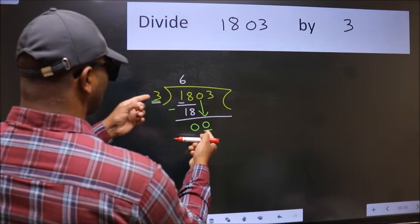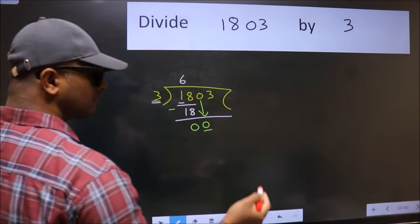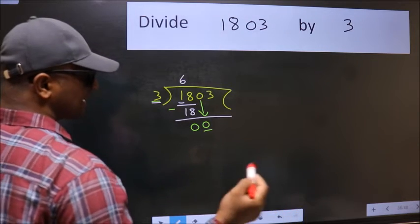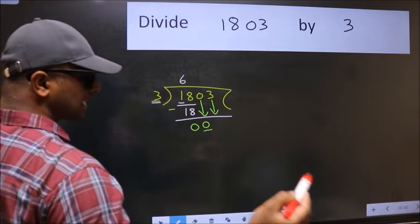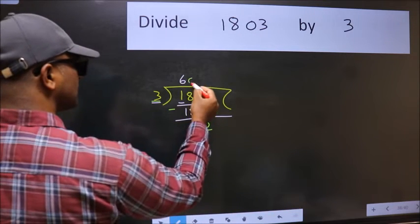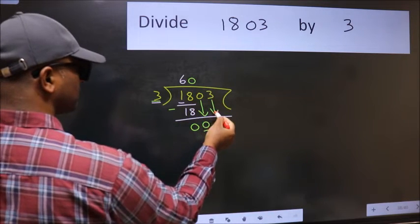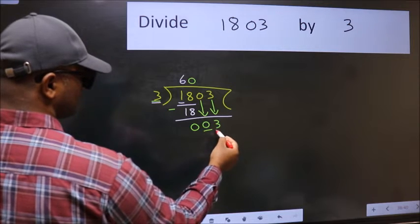0 is smaller than 3, so we should bring down the second number. The rule for bringing down the second number is to put 0 here. Then only we can bring this number down. So, 3.